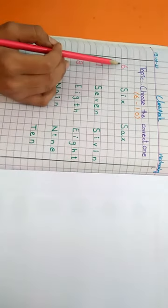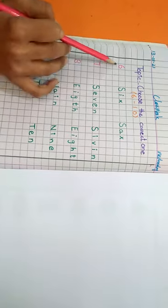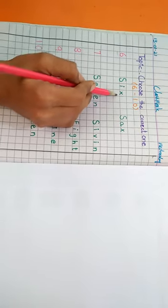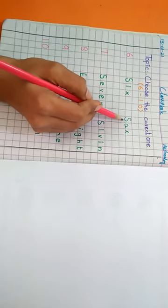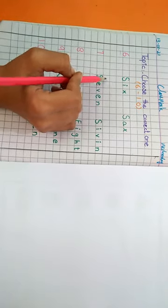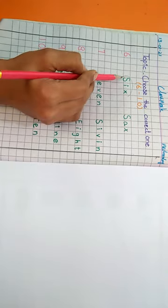Okay. So you can see, what is this? 6. This is number 6. The spellings of 6 are S-I-X or S-A-X. Which is the right one? Yes, this one is right. So we circle on it.